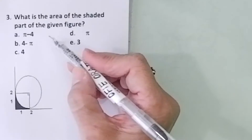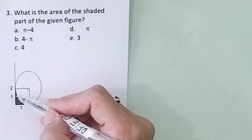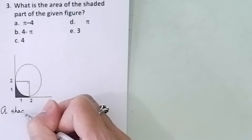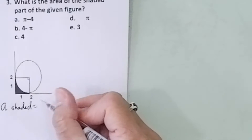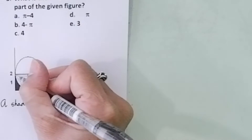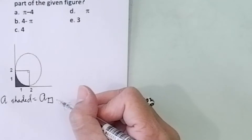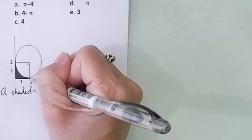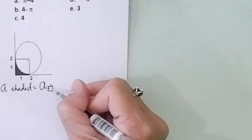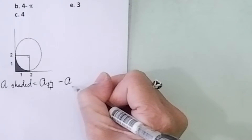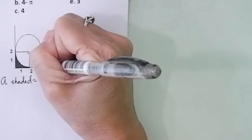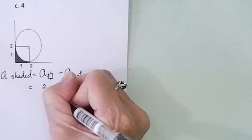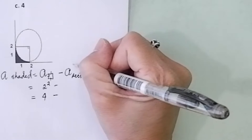Problem number 3: What is the area of the shaded part of the given figure? The area of the shaded part equals the area of the square minus the area of the sector. How did I know it is a square? Each side is 2, so you have 2, 2, 2, 2 — a square. This part here is the sector.